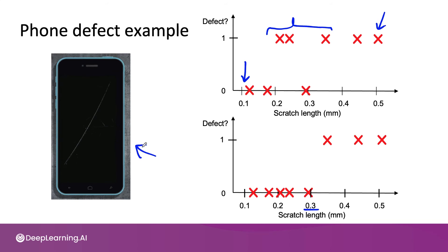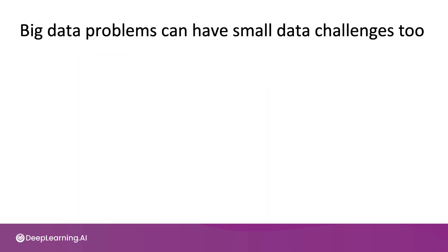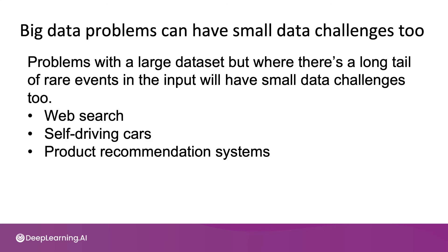You've seen a couple of examples of how label consistency helps a learning algorithm. One more thought: big data problems can have small data challenges too. Specifically, problems with a large dataset but where there's a long tail of rare events in the input will have small data challenges. For example, large web search engine companies have very large datasets of queries, but many web queries are actually very rare, so the amount of clickstream data for rare queries is actually small.